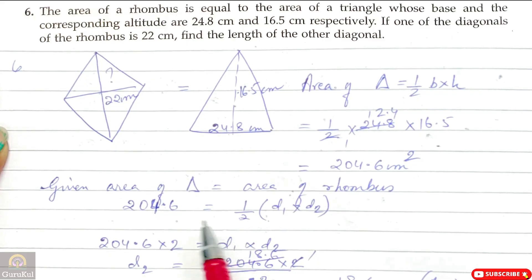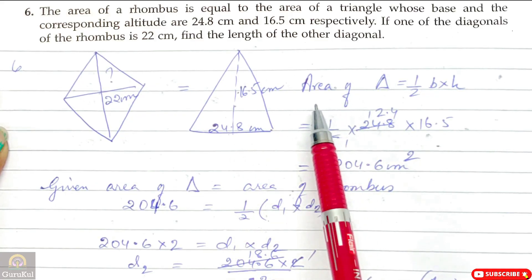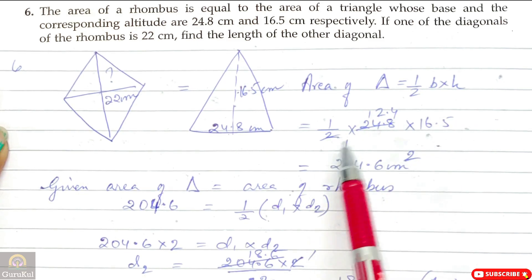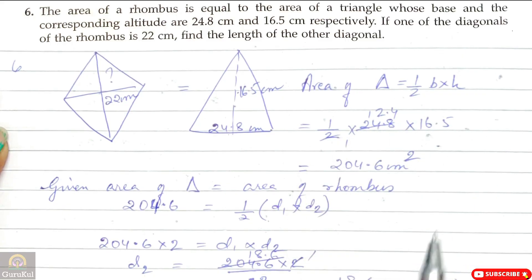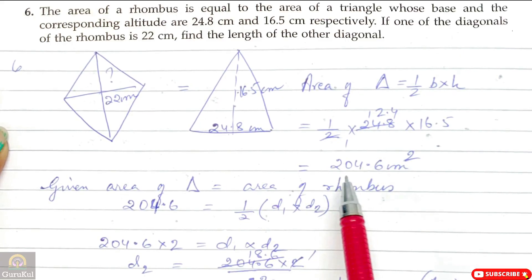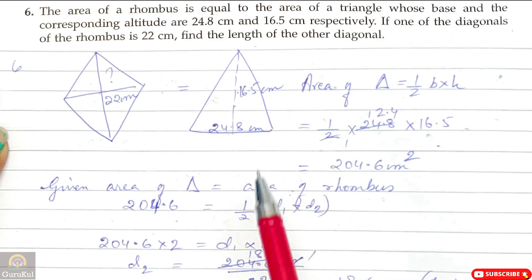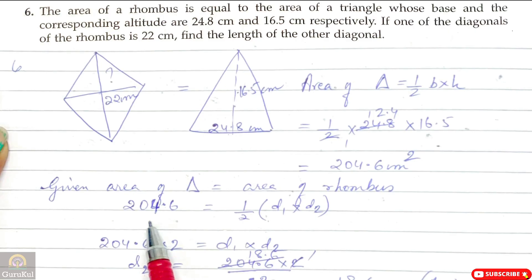To find the area of the triangle, we need base and height, which are mentioned. So let us find out the area of the triangle, which is half base into height. That is half into 24.8 into 16.5. After calculation, the answer is 204.6 cm square. So this is the area of the triangle, which is equal to the area of the rhombus.